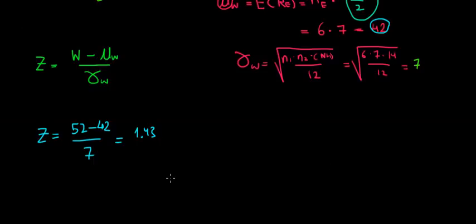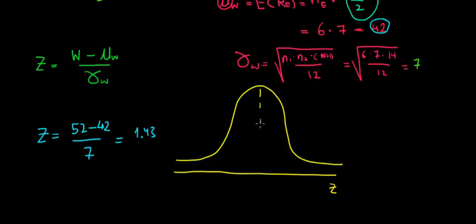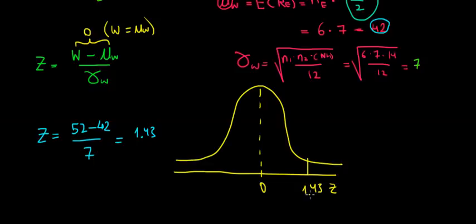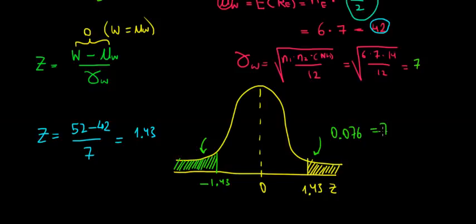Let's plot this on our Z distribution. We have a symmetrical distribution and we're looking at how many standard errors we deviate from 0. A Z value of 0 would mean the rank sum in our sample exactly matches the population mean. Our Z value is 1.43. We look at the Z distribution — using −1.43 because the Z table gives values to the left — and the probability on both sides is 0.076, or 7.6%.